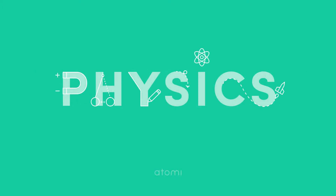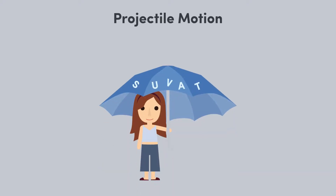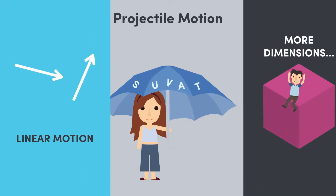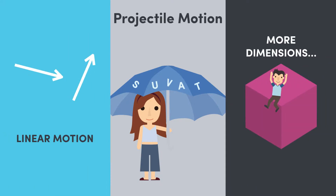Welcome to Year 12 Physics! We're kicking off advanced mechanics, starting with projectile motion. This is a neat extension on all the SUVAT stuff that's been covered previously, but we're moving away from linear motion by adding an extra dimension!